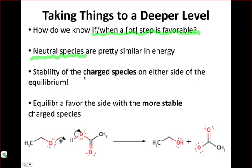As a result, it's the charged species in an acid-base equilibrium, and there will always be a charged species because we're transferring charge when we transfer H+, that really influences the position of the equilibrium. And as I note down here, equilibria favor the side with the more stable charged species.